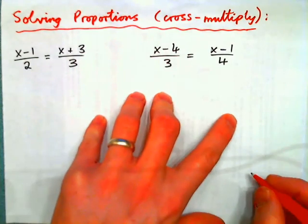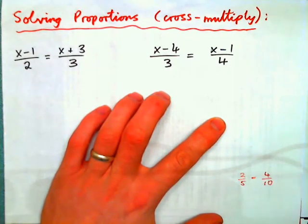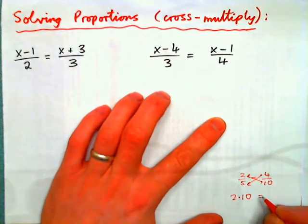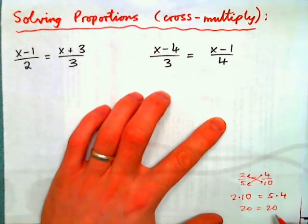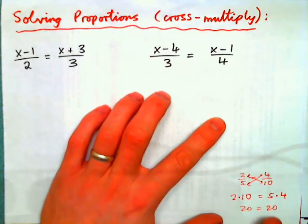Just to remind you why that is okay, 2 fifths is the same as 4 tenths, isn't it? If I was to cross multiply, I would get 2 times 10 equals this times this, 5 times 4, or 20 equals 20. So if I have two fractions that are equal, and I cross multiply like that, then I get an equation that is equal, and so that is an okay thing to do.